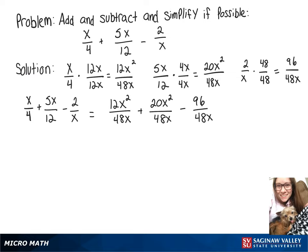And now since those have a common denominator, we can put them all into one fraction. So we have 12x squared plus 20x squared minus 96 all over 48x.